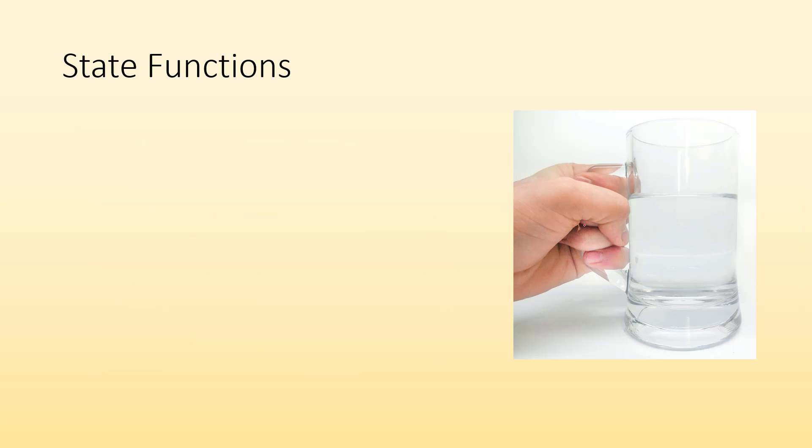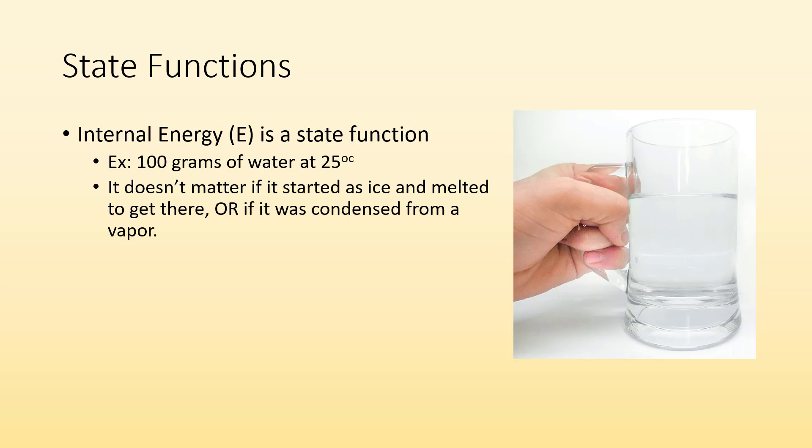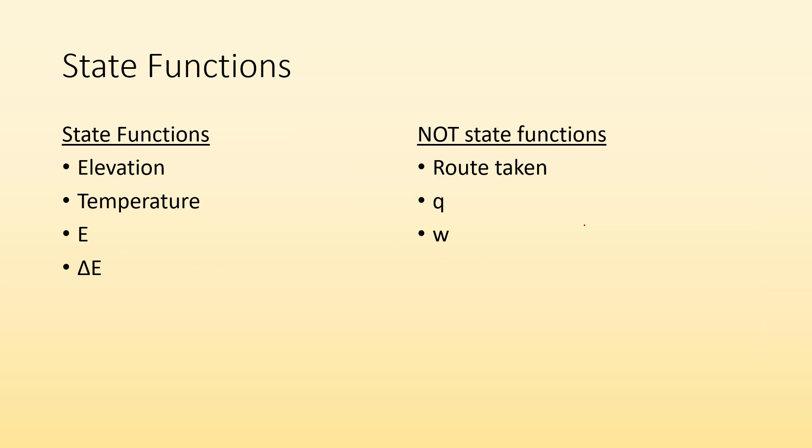So let's talk about some more chemical systems. Internal energy is a state function. For example, 100 grams of water at 25 degrees Celsius has a specific amount of internal energy. It doesn't matter if that water started off as ice and we melted it to get to that point or if it was steam and we condensed it from the vapor to get to that point. It doesn't matter. It has a specific amount of internal energy at that state. So that's a state function.